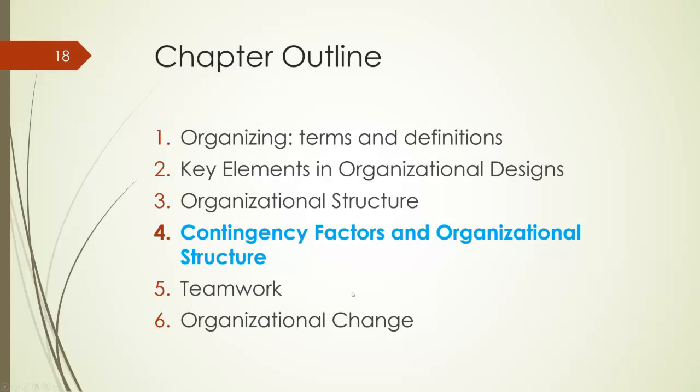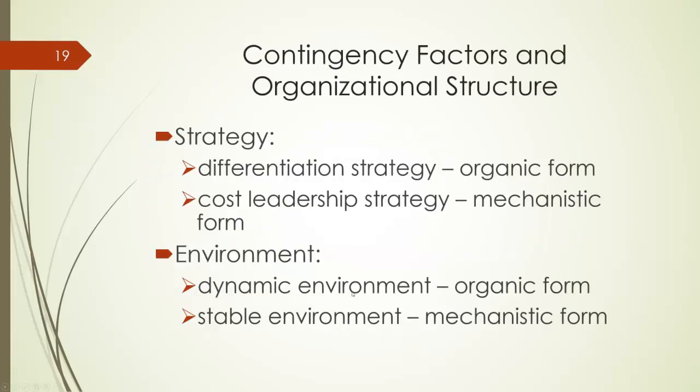There are three important contingency factors that affect design choices, discussed here in Section 4. They are strategy, environment, and technology. The point is that there is not one best way to organize. To be effective, managers should design an organization to fit with its various contingency factors. A firm can follow a cost leadership strategy or a differentiation strategy. An organization that adopts a differentiation strategy should develop new and innovative products and bring them to market quickly, requiring flexibility and innovation enabled by organic design. A mechanistic form, on the other hand, would enable a cost leadership strategy.